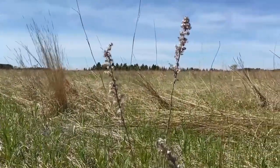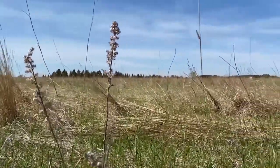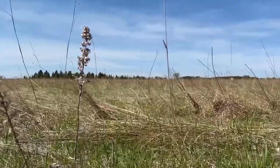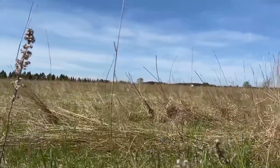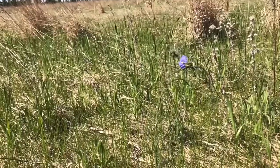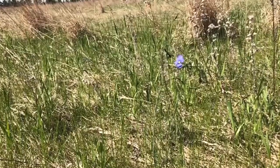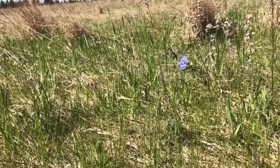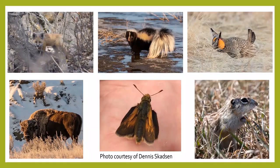Unfortunately, much of North Dakota's prairie grasslands have vanished, and the prairie is now one of the most endangered ecosystems in North America. Prairie habitats are home to species such as bison, elk, mule deer, pronghorns, red fox, coyotes, skunks, ground squirrels, greater prairie chickens, sharp-tailed grouse, garter snakes, smooth green snakes, hog-nosed snakes, and toads.